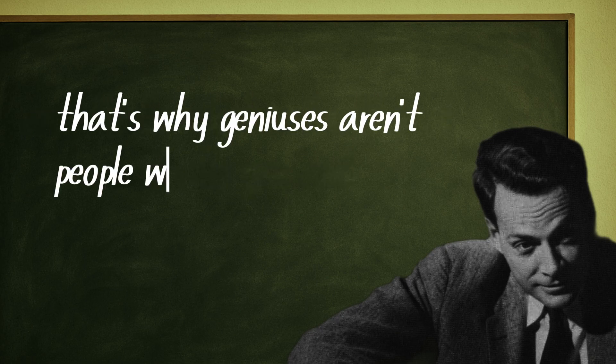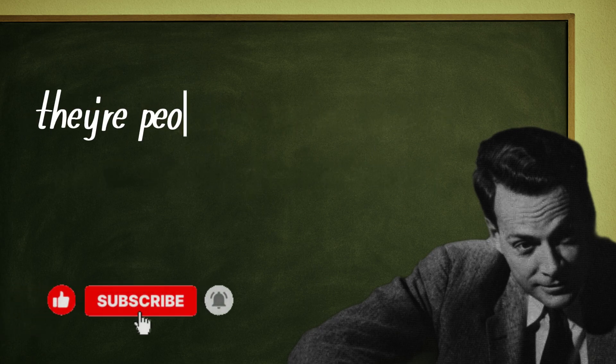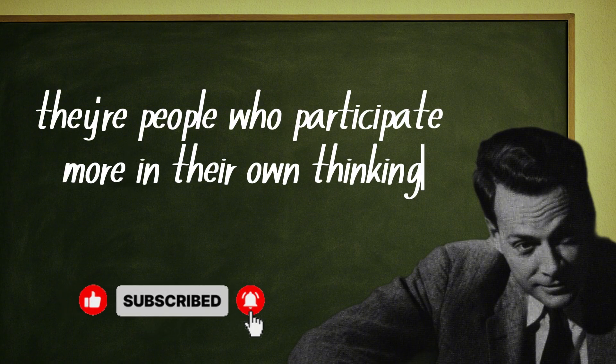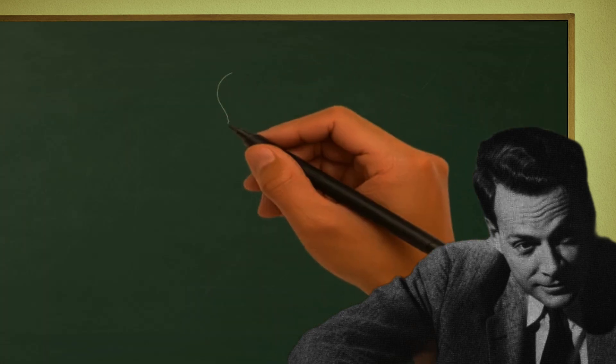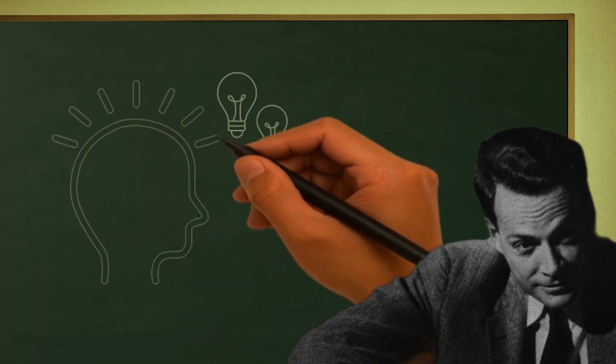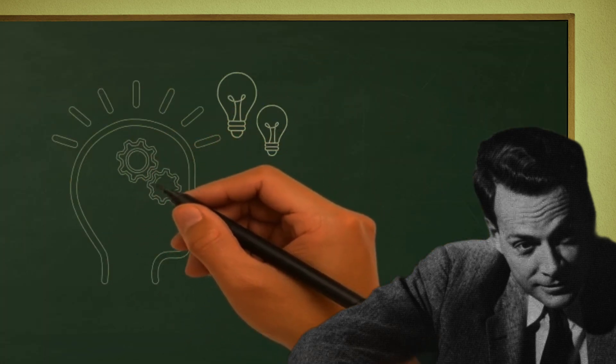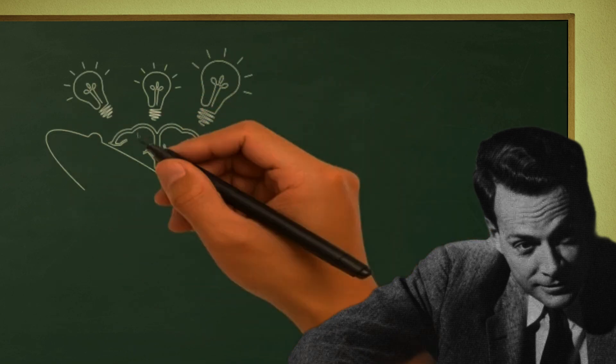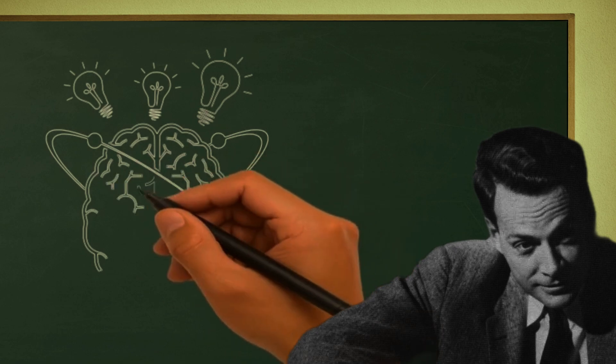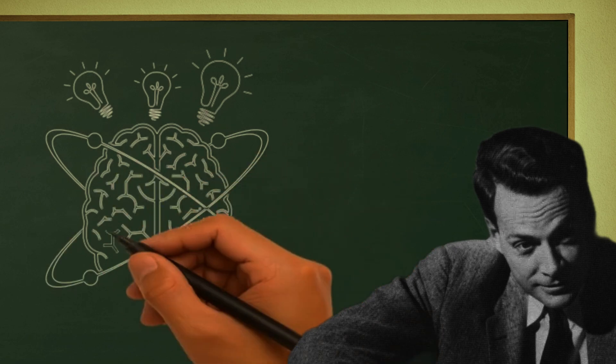That's why geniuses aren't people with better memories. They're people who participate more in their own thinking. They don't repeat words, they manufacture meaning. When they read something, they stop and ask, what does this really mean? How would I explain it to someone else? And at that very moment, the brain lights up. Thousands of new connections form, and what was once just information becomes living knowledge.